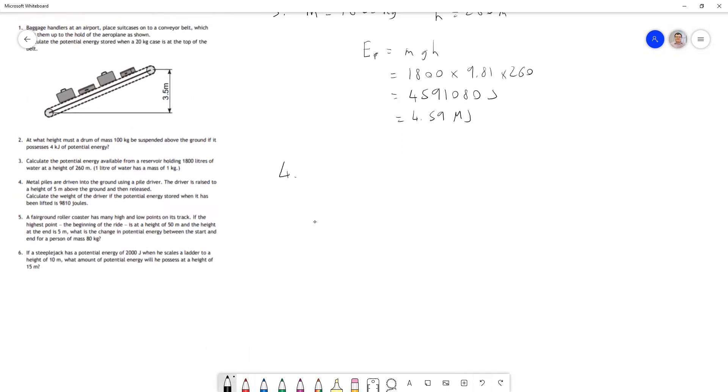Question four tells us the height is five meters and the potential energy is 9810 joules. We've been asked to find the weight. Sometimes these questions use weight incorrectly. The weight of an object is not the same as the mass. Weight equals mass times gravity and is measured in Newtons because weight is a downward force. Notice that potential energy has mg here.